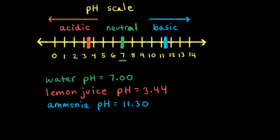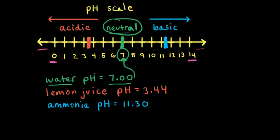Now that we've calculated the pH of three different substances, let's find where they rank on the pH scale. The pH scale normally goes from 0 to 14, though it is possible to go below 0 or above 14. Pure water at 25 degrees Celsius has a pH of 7.00, right in the middle, and we say water is a neutral substance. An aqueous solution with a pH less than 7 is acidic. Lemon juice, with a calculated pH of 3.44, is acidic.